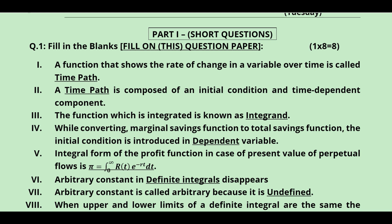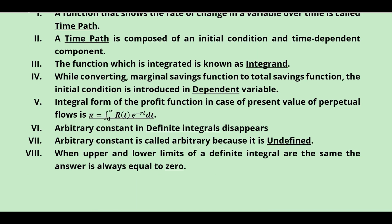While converting the marginal savings function to the total savings function, the initial condition is usually introduced in the independent variable. However, in this economic application, it has to be substituted in the dependent variable depending upon the economic sense. You can refer back to the video on this channel where the marginal savings function is converted into the total savings function.